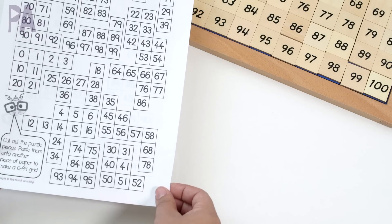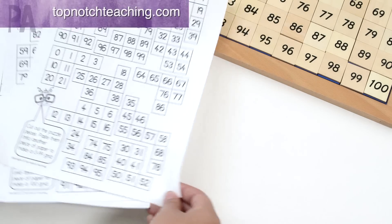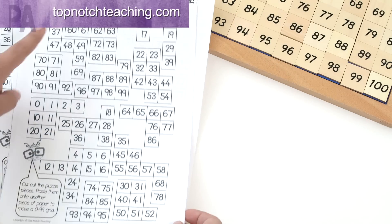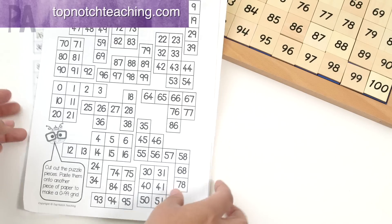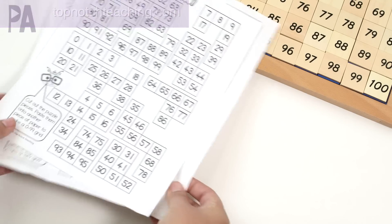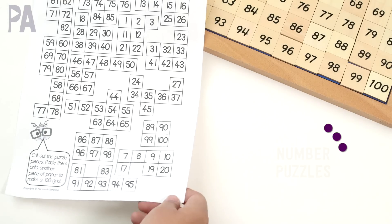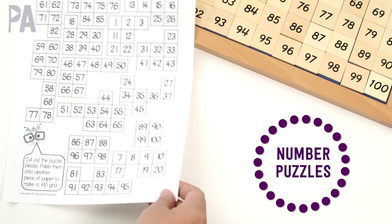The next printable is from Top Notch Teaching and she has several different versions of this: a 0 to 99 chart puzzle, a 1 to 100, and then a 1 to 120. So if we use the 1 to 100, you just print this out and then you cut out the shapes and you're gonna have a puzzle.